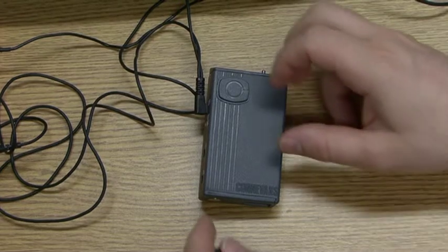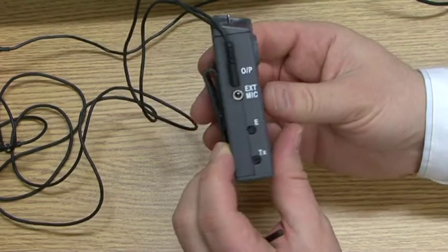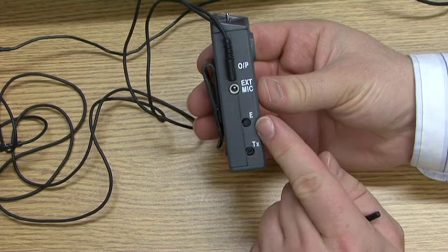If we look at the side, the environmental microphone adjustment is marked as E. The transmitter microphone adjustment, also known as the gain control, is marked as TX.